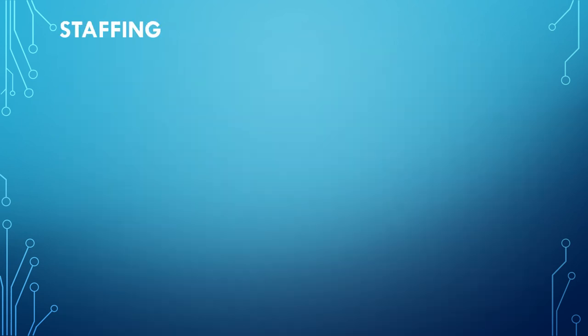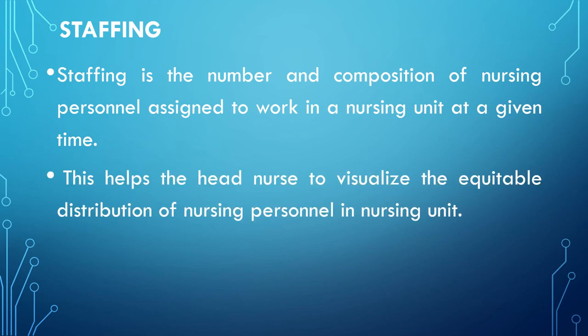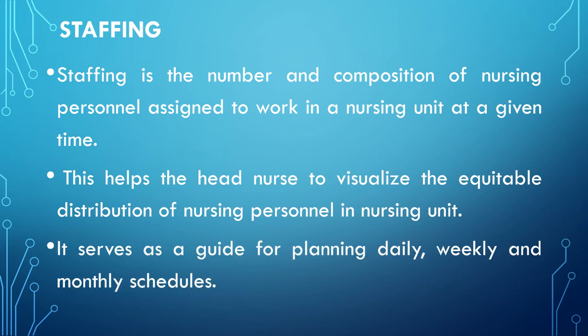The third prerequisite is staffing — the number and composition of nursing personnel assigned to work in a nursing unit at a given time. This helps the head nurse to visualize the equitable distribution of nursing personnel in the unit and serves as a guide for planning daily, weekly, and monthly schedules.